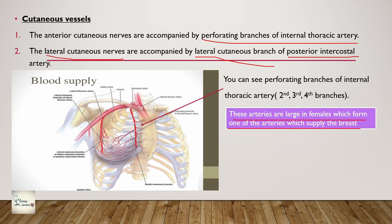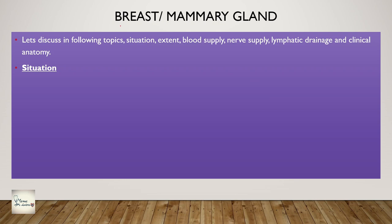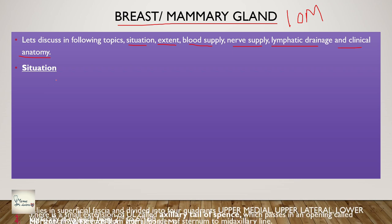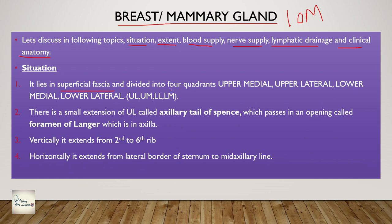Coming to the breast and mammary gland - this is a very important exam question. We will discuss the following topics: situation, extent, blood supply, nerve supply, lymphatic drainage, and clinical anatomy related to the mammary gland. Regarding situation, it is situated in the superficial fascia and divided into four quadrants: upper lateral (UL), upper medial (UM), lower lateral (LL), and lower medial (LM). The structure called the axillary tail of Spence passes through an opening called the foramen of Langer into the axilla.